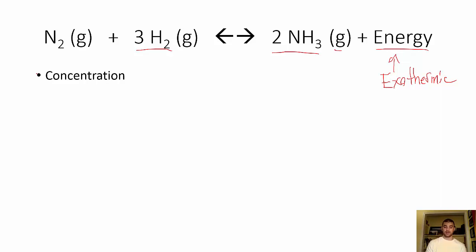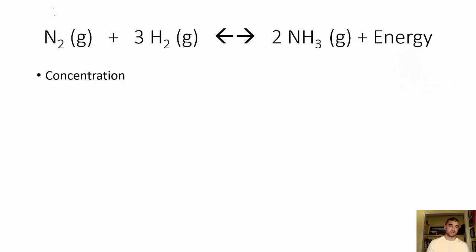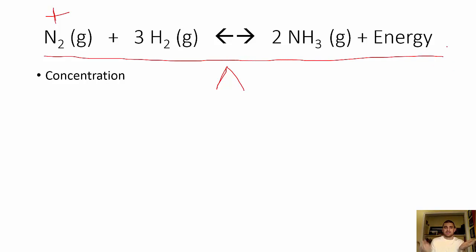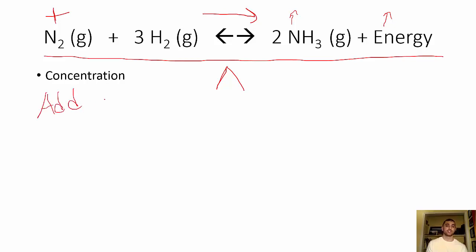There are different ways we can mess with it. One is by changing the concentration of things. So let's see what happens when we increase the amount of N2. The way I think about it is equilibrium is like a balance — we have a certain balance here, and everything's nice and level. If we're adding more N2, that's going to mess up our balance, so we've got to somehow get our balance back. If we increase N2, we're going to have to shift our equilibrium to the right. So basically, if we add stuff, we shift away from that side.